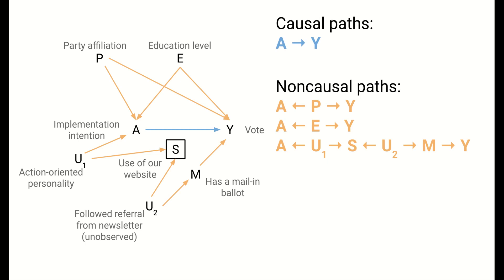Pause the video here and take a minute to identify an appropriate conditioning set. Our conditioning set, Z, should include P, E, and M. P and E block the first two paths because they are the middle nodes of chains. The third path is open because of our inherent conditioning on the selection node S, which is the collider on the path. We would want to condition on U1, U2, or M, but since the U variables are unmeasured, we have to condition on M.